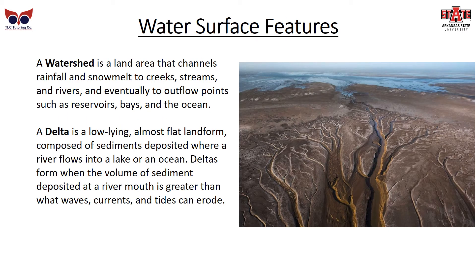A watershed is a land area that channels rainfall and snowmelt to creeks, streams, and rivers, and eventually to outflow points such as reservoirs, bays, and the ocean. A delta is a low-lying, almost flat landform composed of sediments deposited where a river flows into a lake or ocean. A delta is formed when the volume of sediment deposited at a river mouth is greater than what waves, currents, and tides can erode. You can see an image of that here to the right.